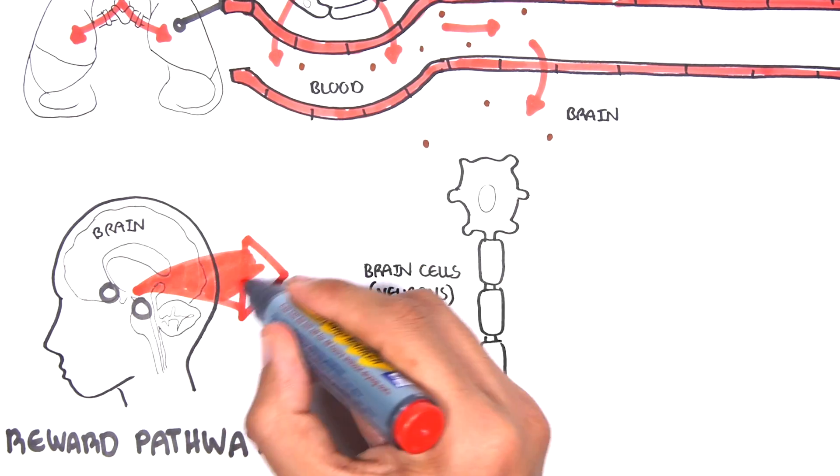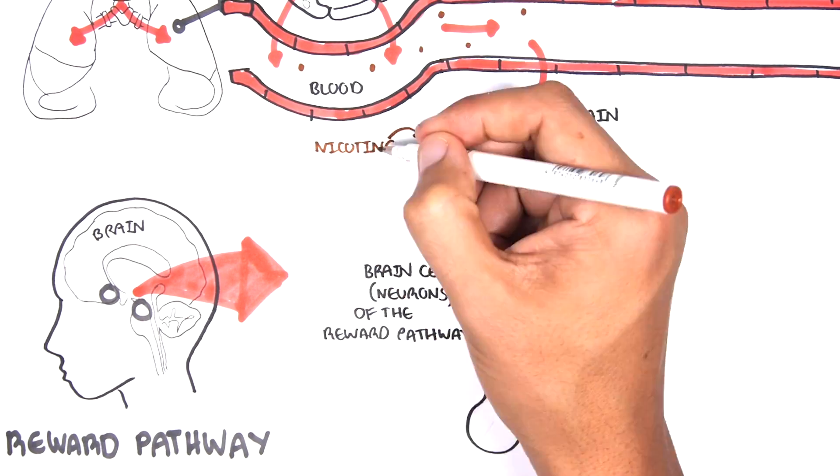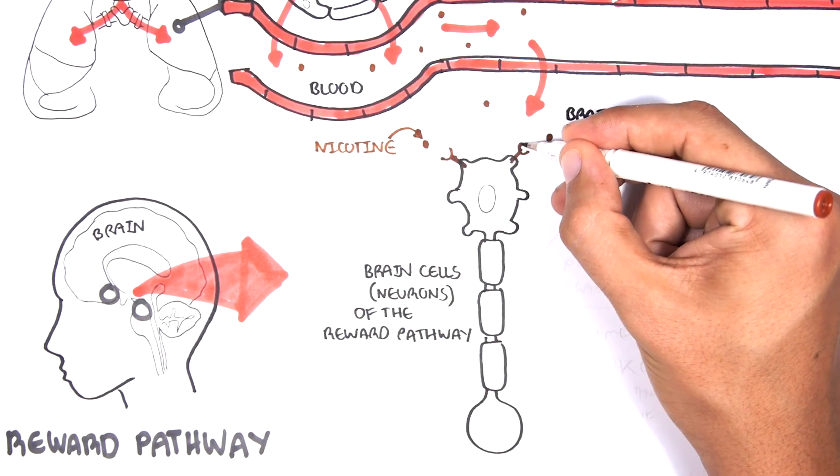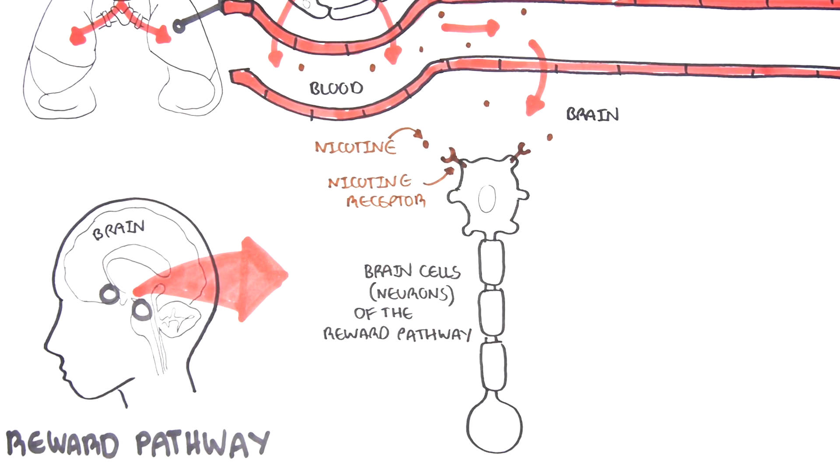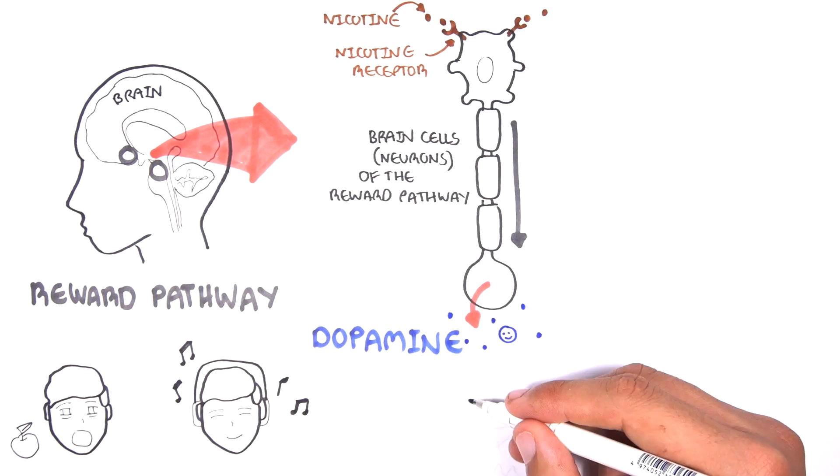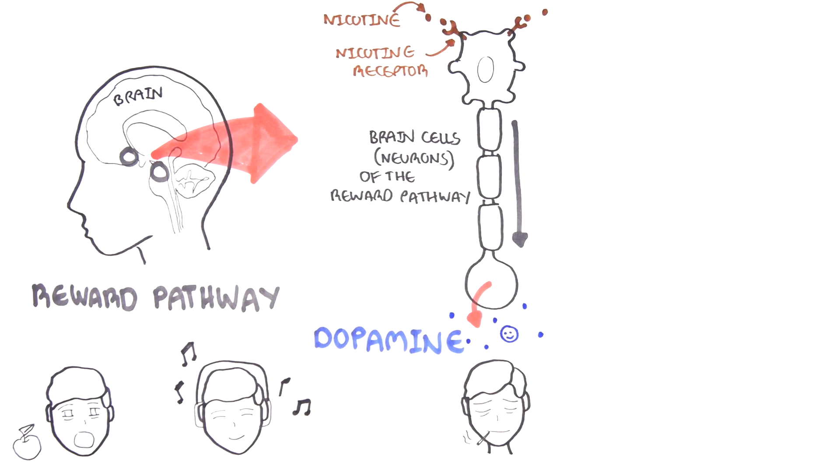Once nicotine arrives at this area of the brain, nicotine attaches itself to a receptor on neurons, like a key fitting in a lock, waking up the reward pathway of the brain. When the reward pathway is activated, a chemical called dopamine gets released and we feel warm and satisfied.